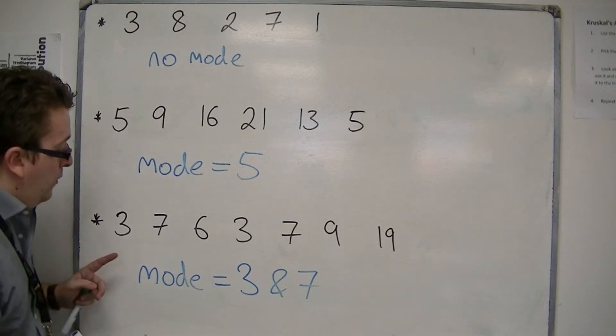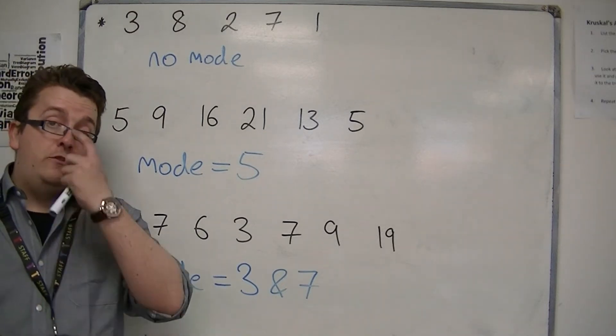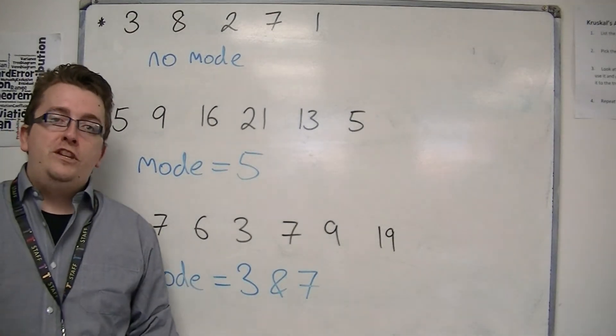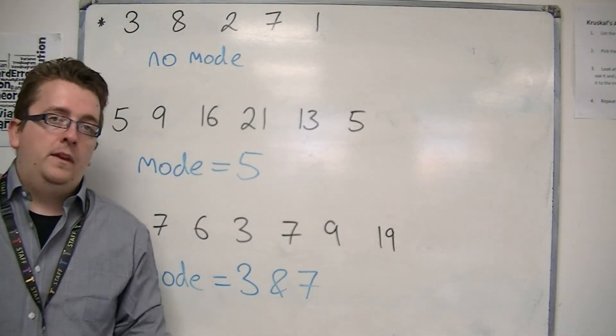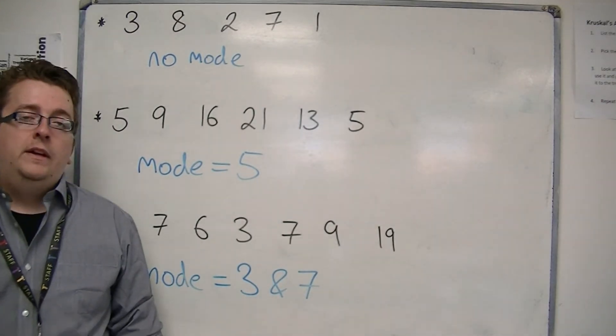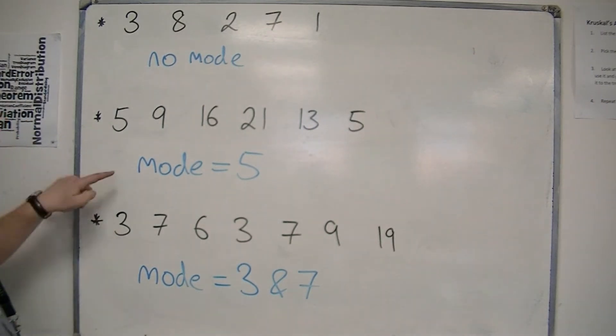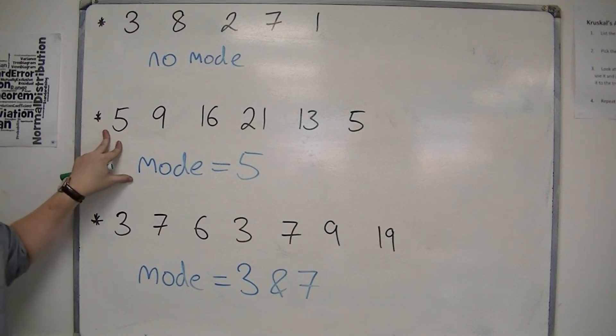In some cases, when you look at this, some people might refer to this as having no mode because there is no most common number. But it depends upon your preference. In the majority of cases, if you are going to be asked to find the mode, there will be an obvious mode to find, like in example two here.